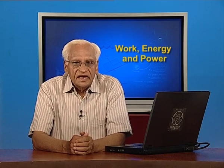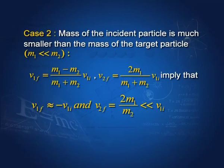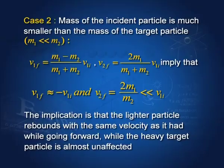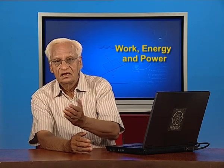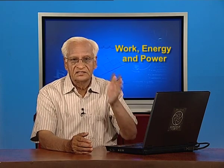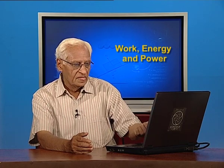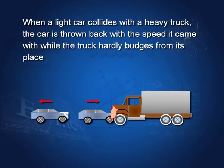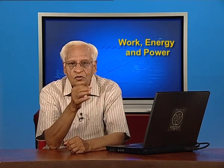Case 2: the mass of the incident particle is much smaller than the mass of the target particle — a light particle hitting a heavy particle. In this case, v₁f equals −v₁ᵢ: the final velocity of particle 1 is in the opposite direction, meaning it bounces back with the same speed. The velocity of the second particle is very small — it hardly moves. Like a car hitting a heavy truck: the car bounces back while the truck barely moves.